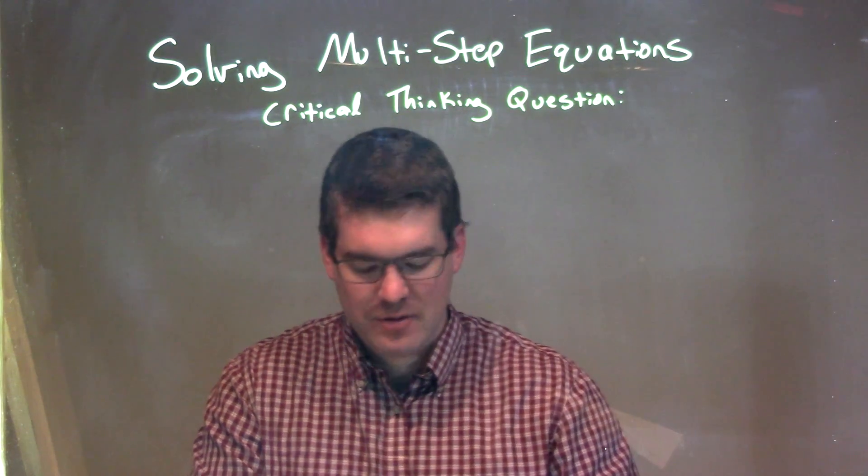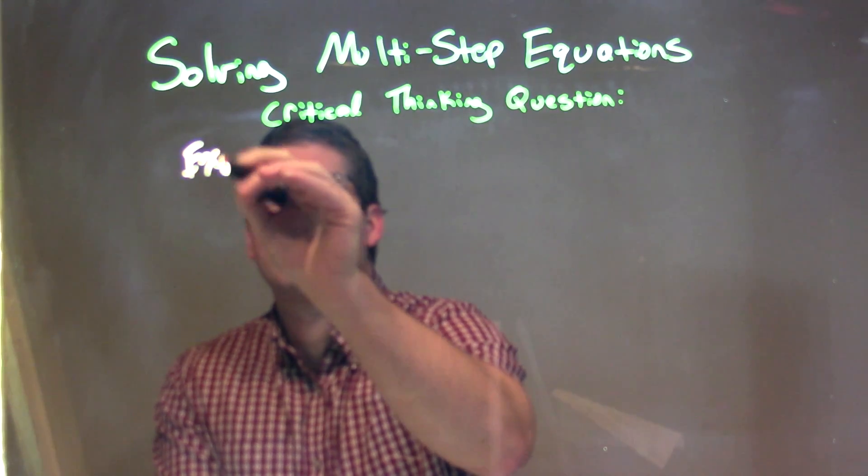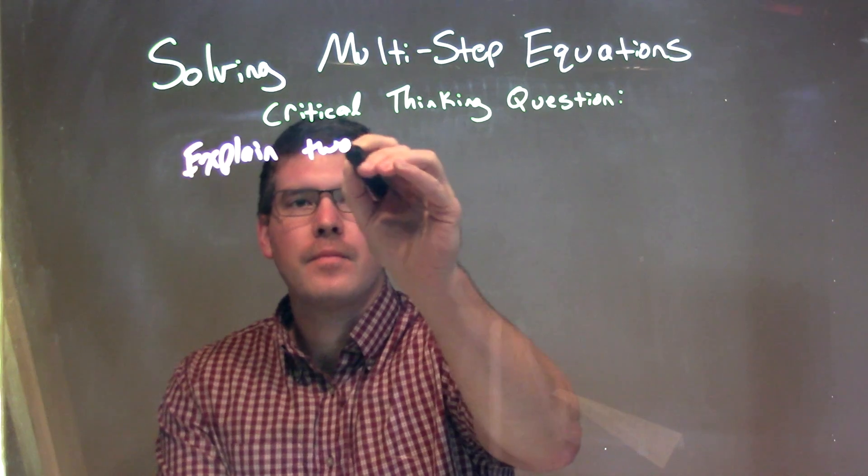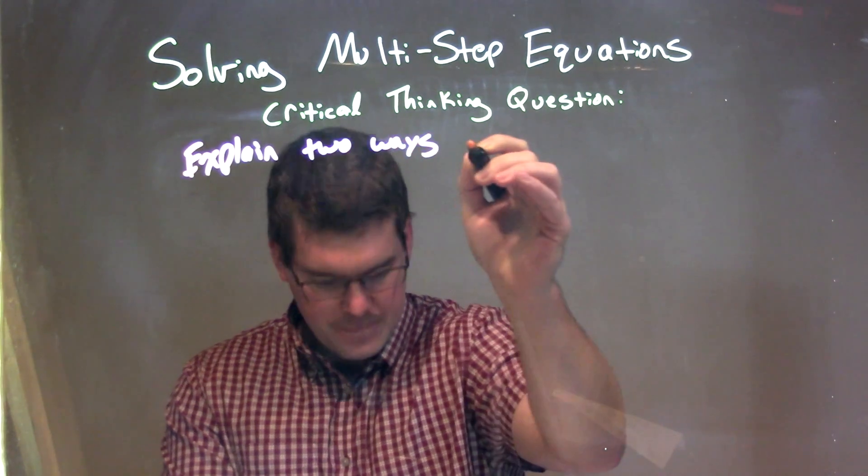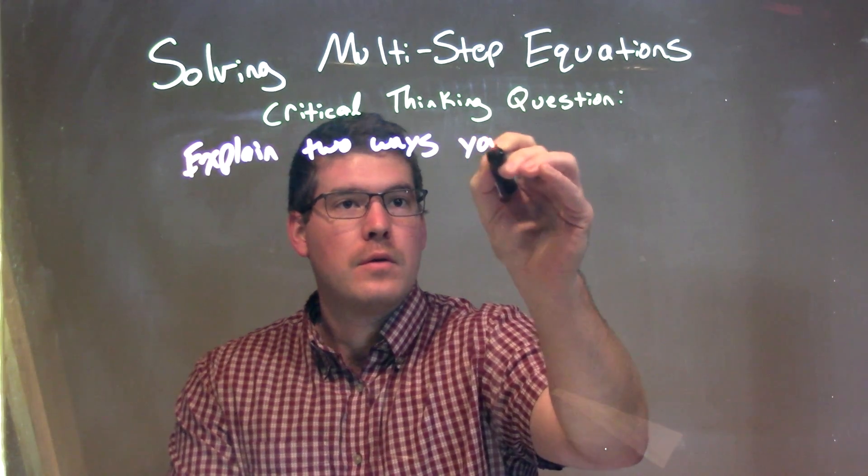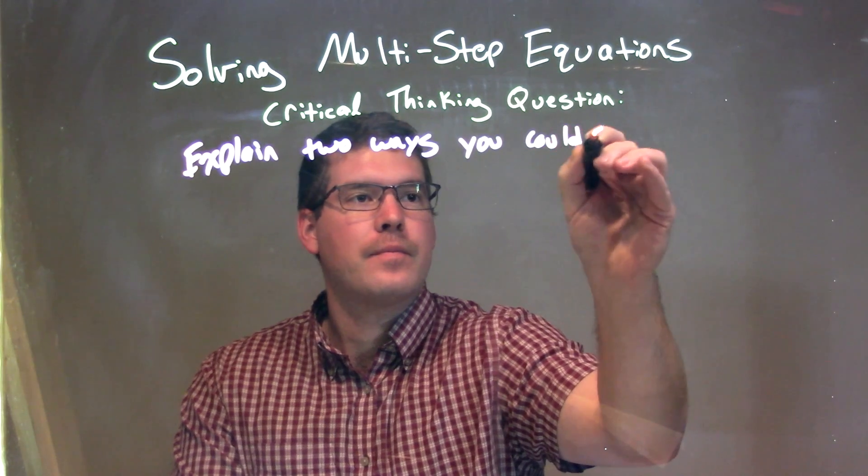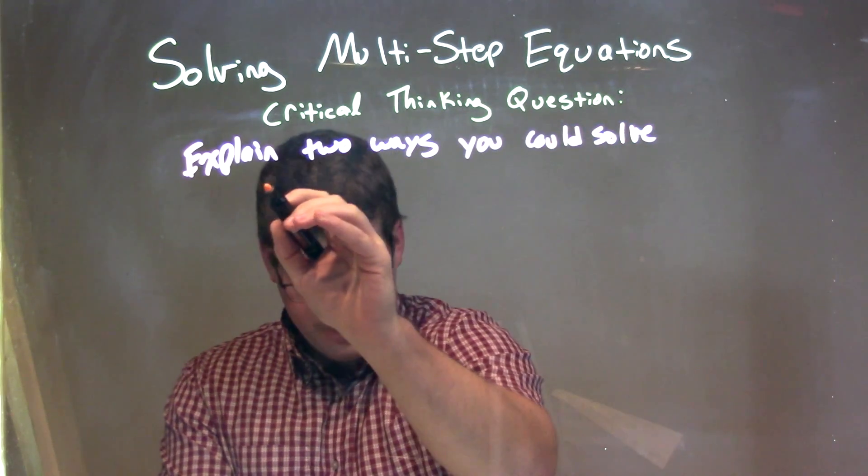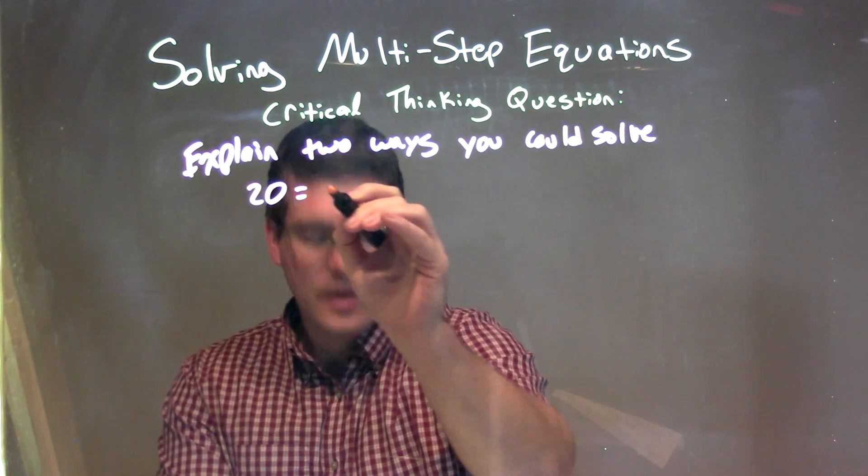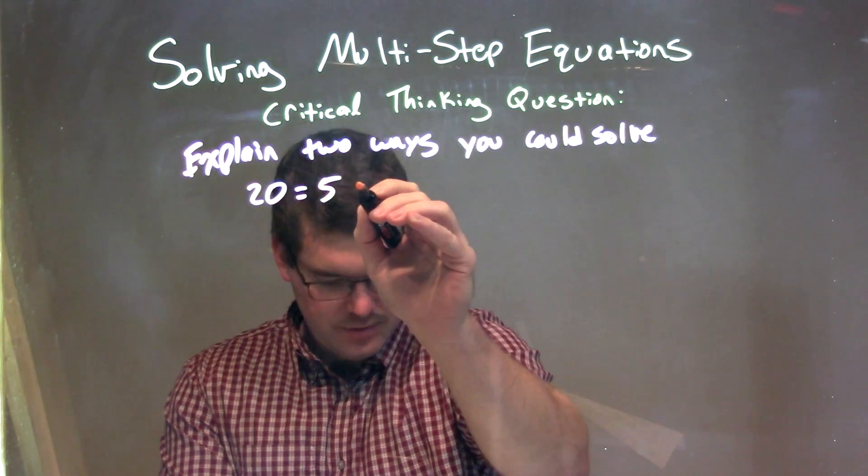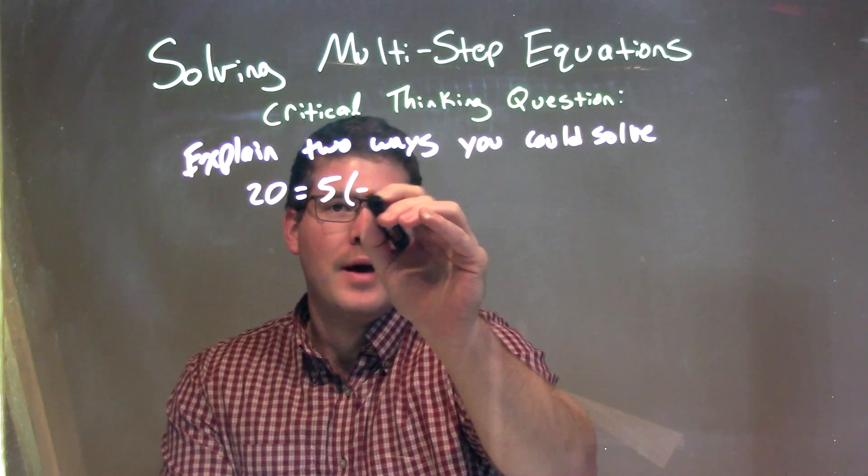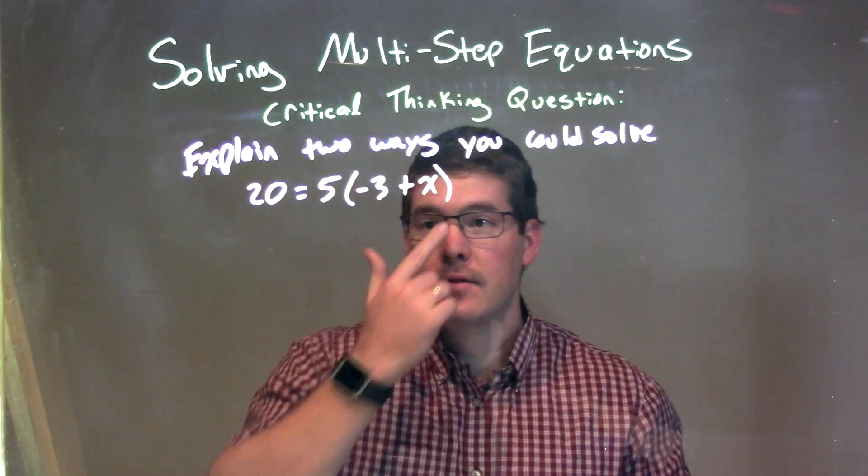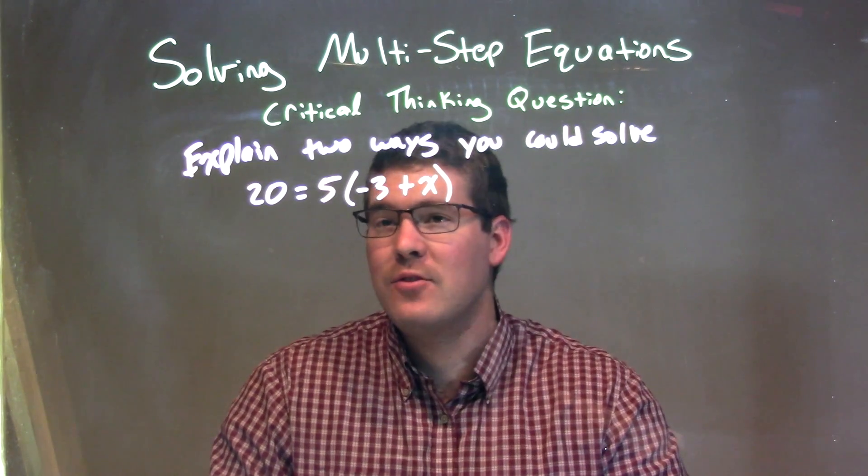So the problem is giving us a question here. Explain two ways you could solve 20 = 5(-3 + x). So they want us to find two ways we can solve that.